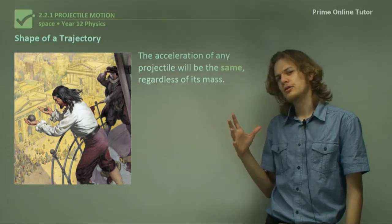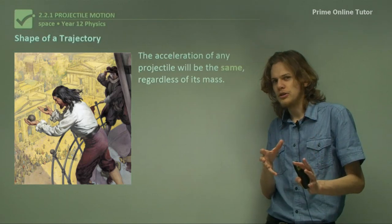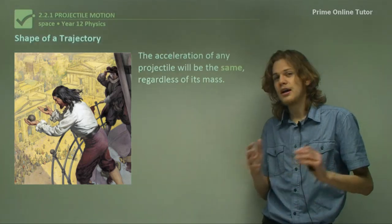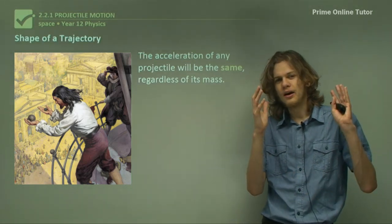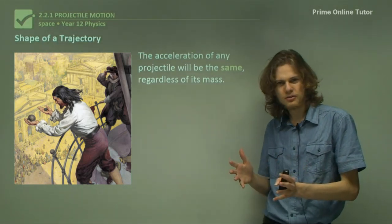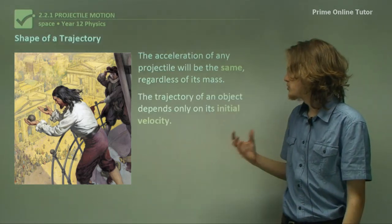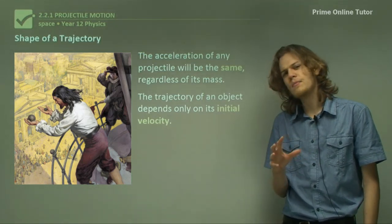The acceleration of any object does not depend on its mass. We've gone through this. Gravitational force is proportional to mass, acceleration is proportional to mass, therefore acceleration will be constant for gravitational force. That means the trajectory of any object only depends on its initial velocity, and not its mass.